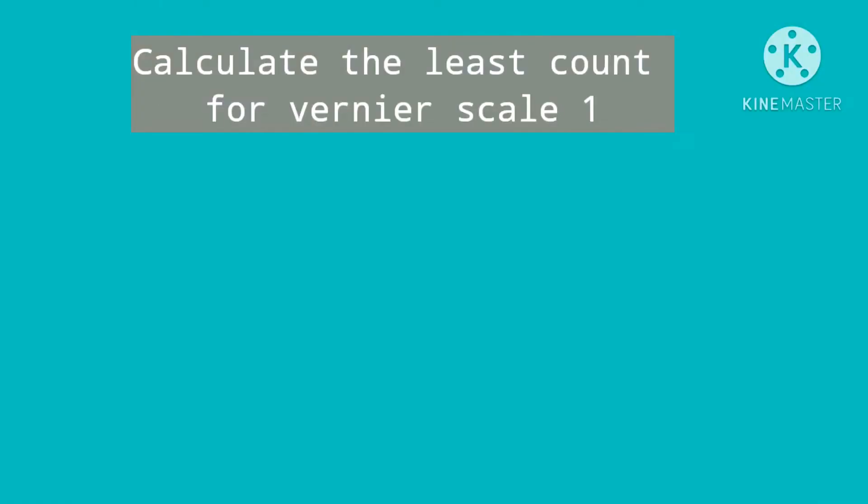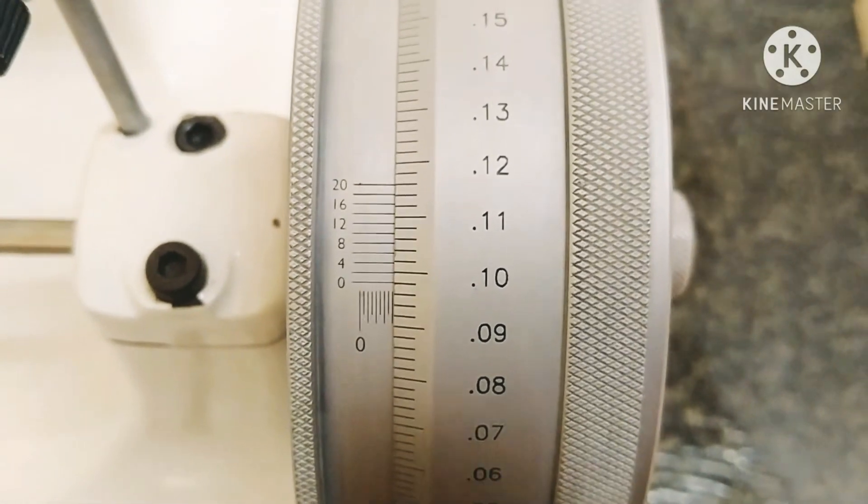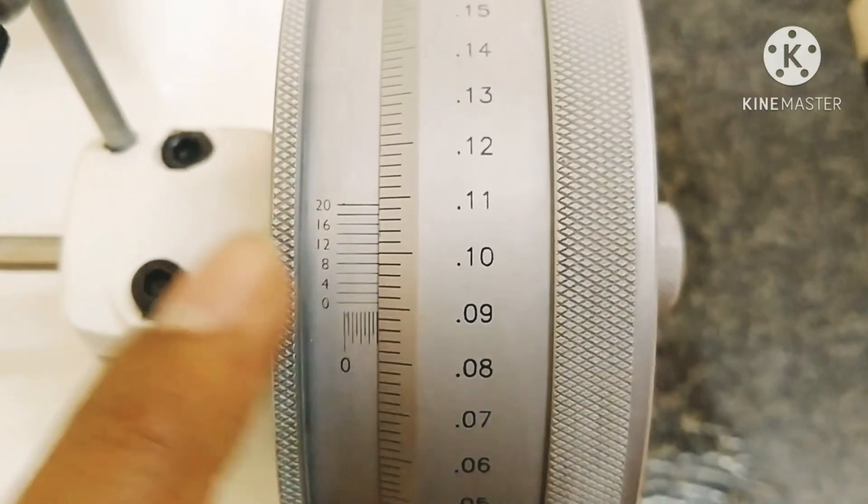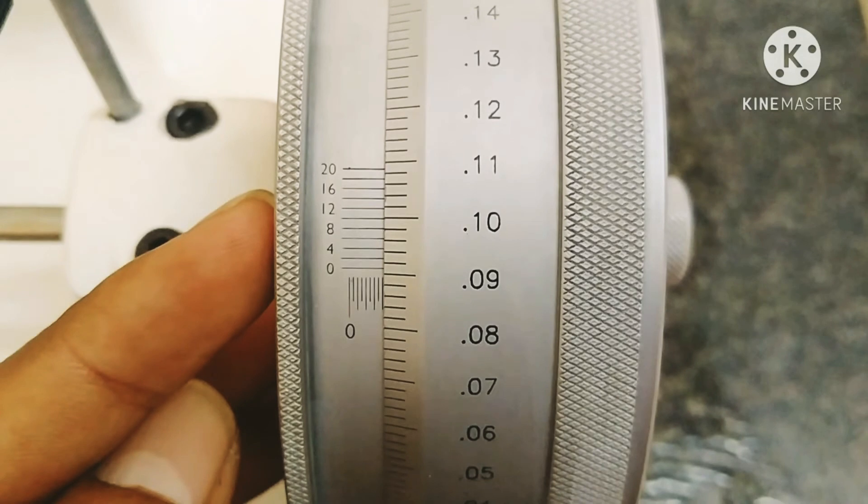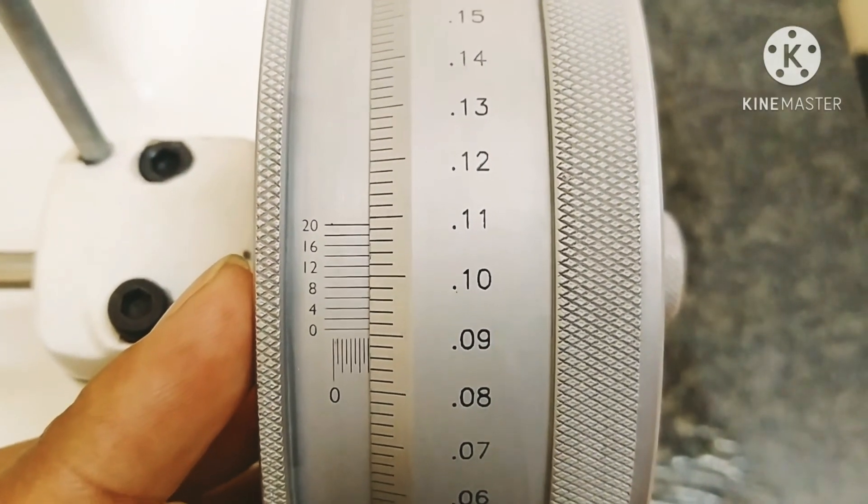Now we will calculate least count for main scale or vernier scale 1. The formula is the smallest division on main scale divided by total number of divisions on the round scale or thimble scale. The smallest division is 0.5 mm divided by 250, which becomes 0.002 mm. With respect to the main scale, there are 10 divisions marked: 0.002, 0.006, 0.008, 0.010, 0.012, 0.014, 0.016, 0.018, and 0.020.